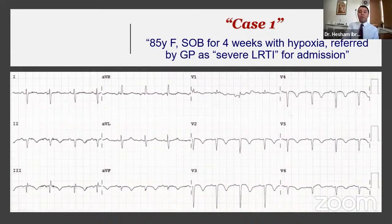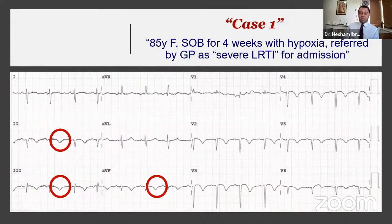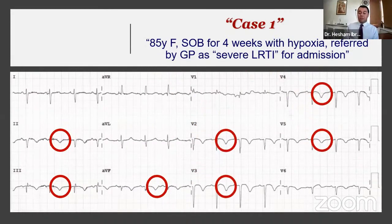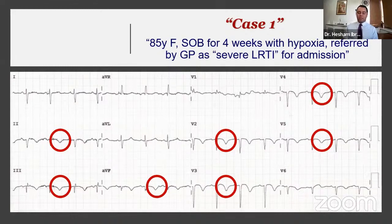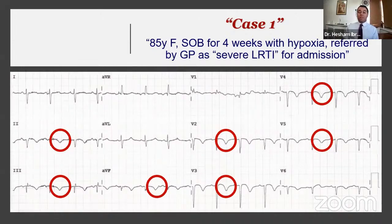The main abnormality here is T-wave divergence — inversion in the inferior leads: 2, 3, and aVF — and also T-wave inversion in the anterior leads: V2 to V5. When you see simultaneous T-wave inversion in the inferior and anterior leads at the same time in a patient presenting like this, there is usually one cause.